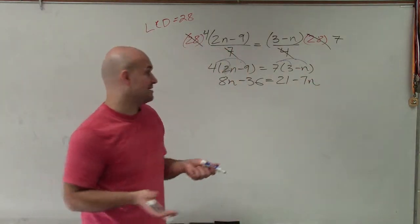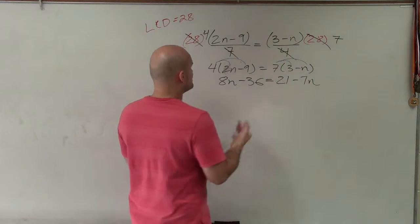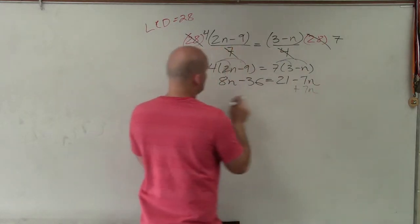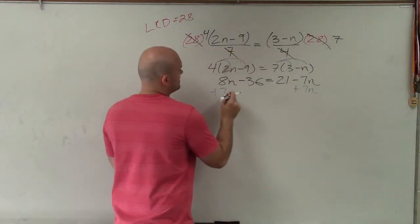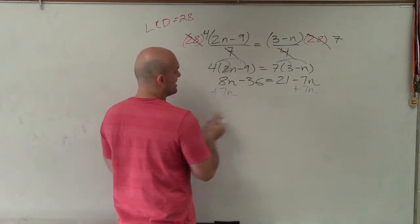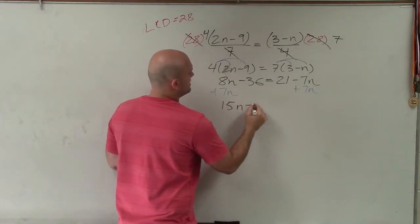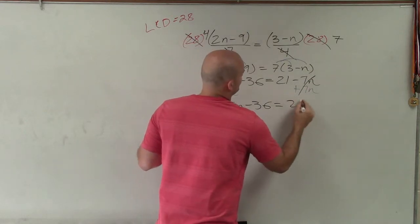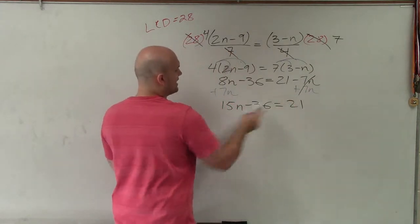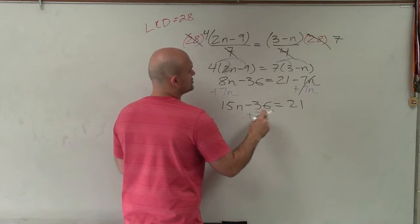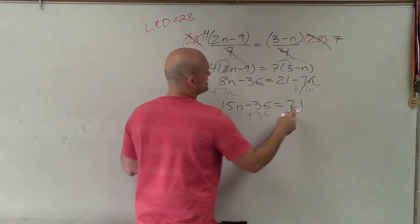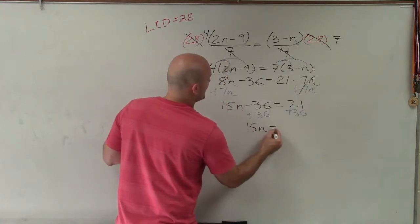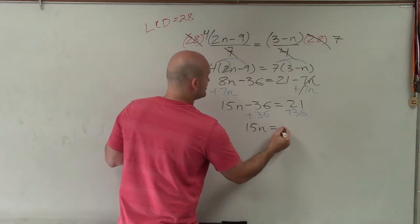Now I need to get the variables to the same side. I like to keep my variables positive, so I'm going to add 7n to both sides — I can only add it to combine like terms. So that becomes 15n minus 36 equals positive 21. Now I need to get n by itself, so I'll undo the subtraction of 36 by adding 36 to both sides. Therefore, I have 15n equals 57.